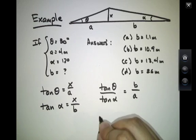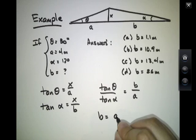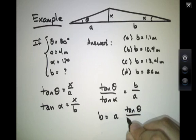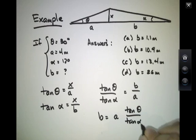In other words, B, the thing I would like to know, is equal to A tangent of theta over tangent of alpha.